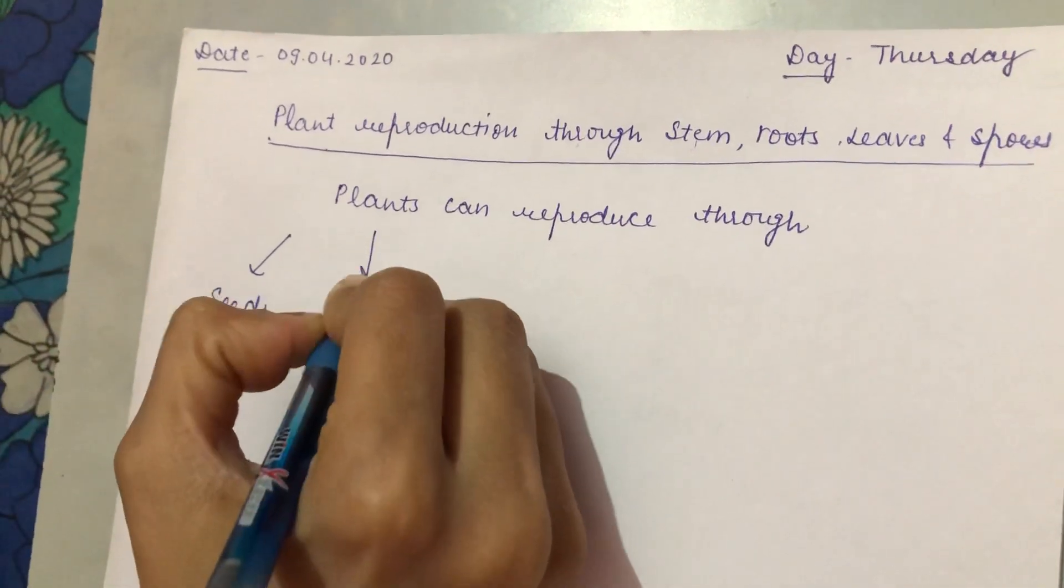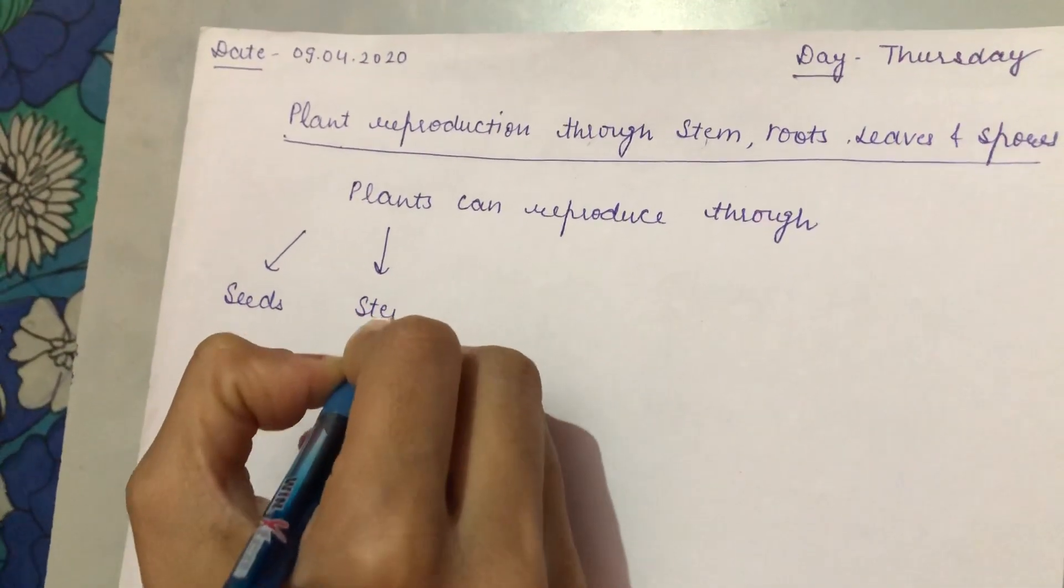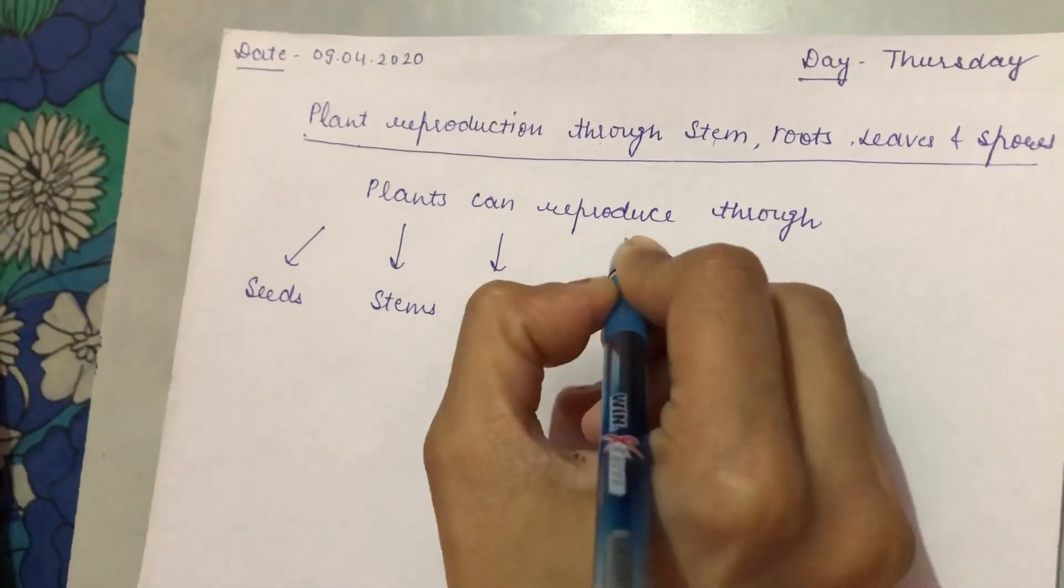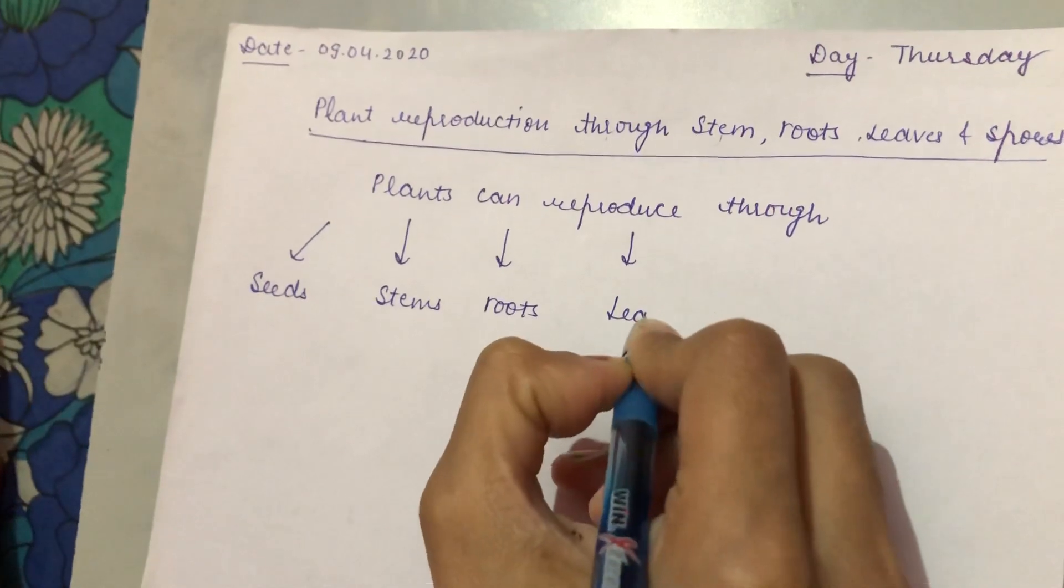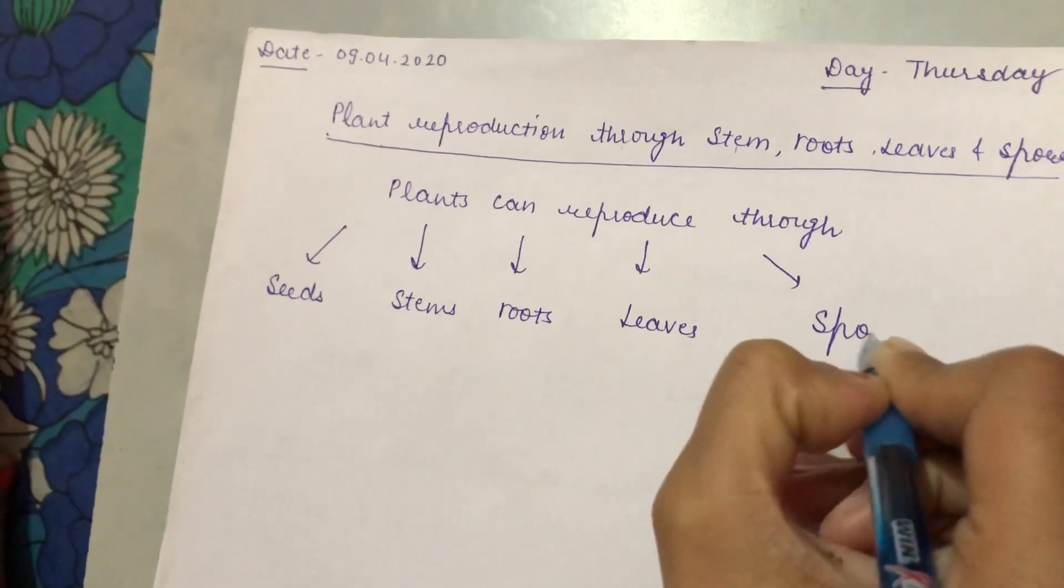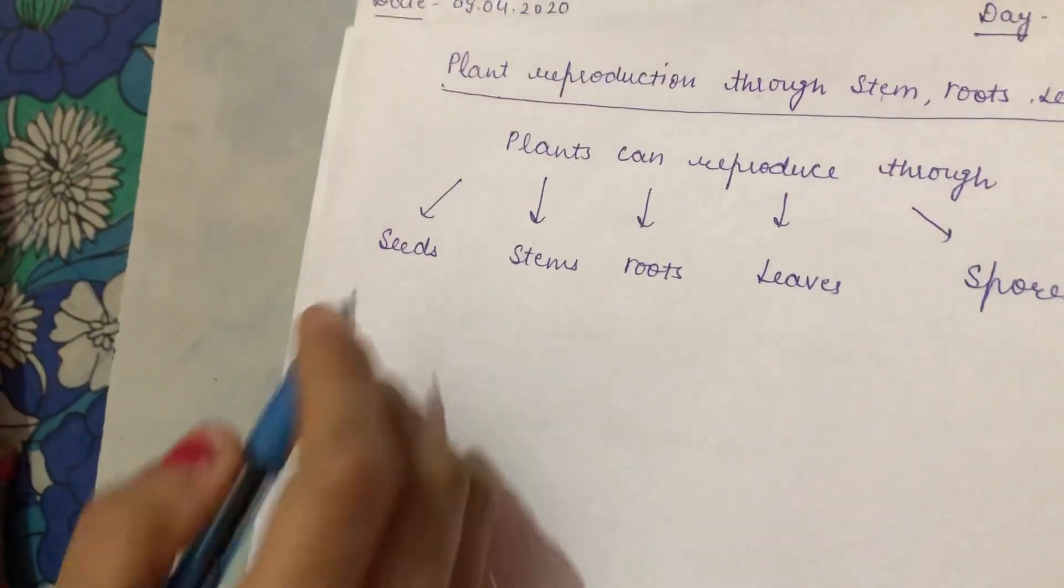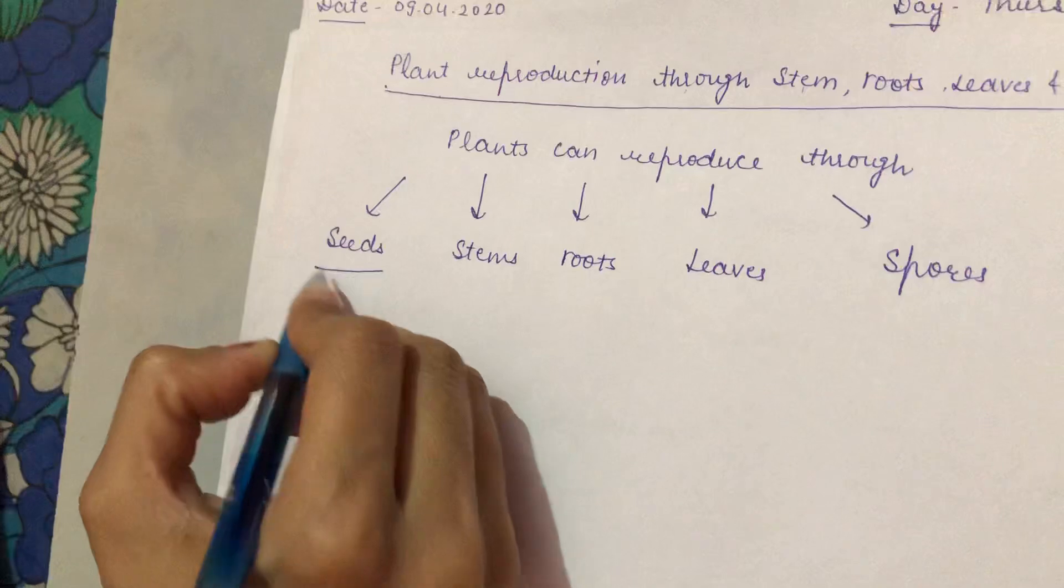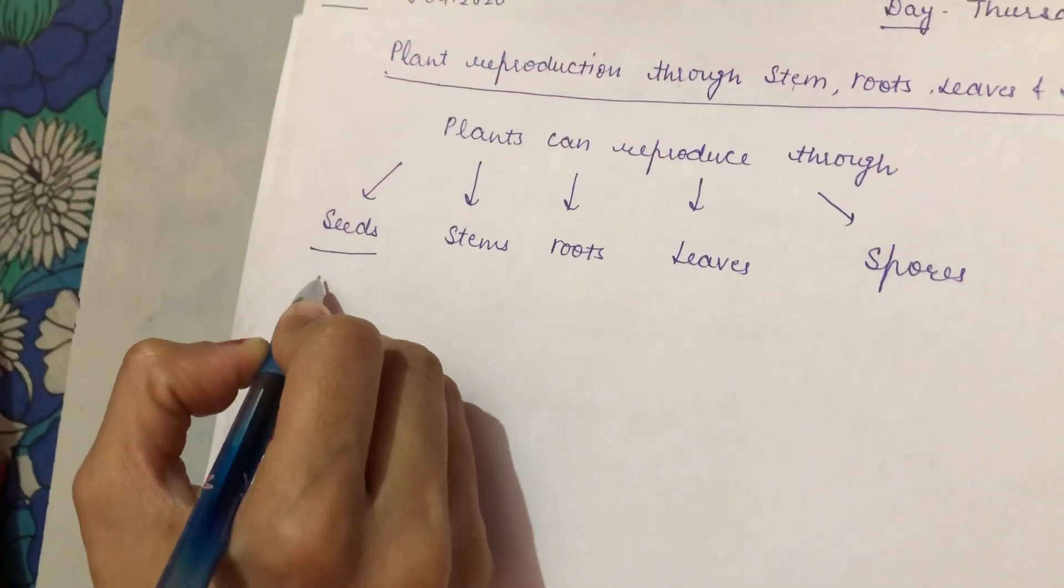Earlier I had told you that plants can reproduce through seeds, stems, roots, leaves and spores. How new plants can grow from seeds? This I have explained in my previous lecture.